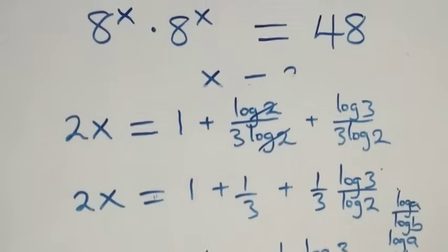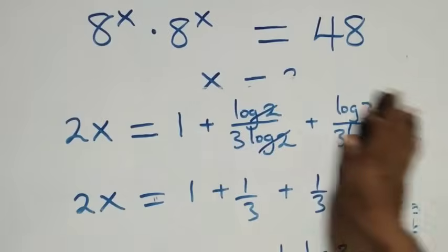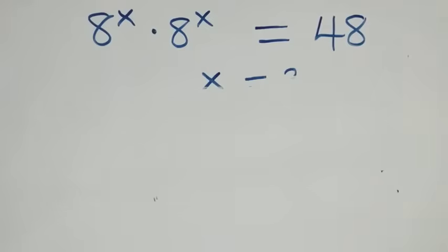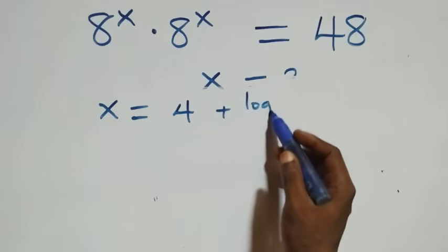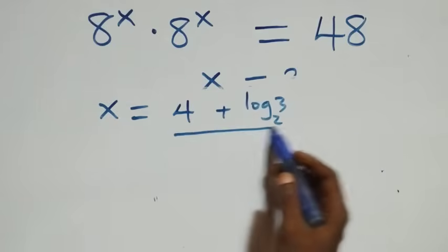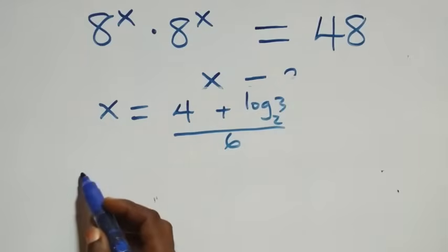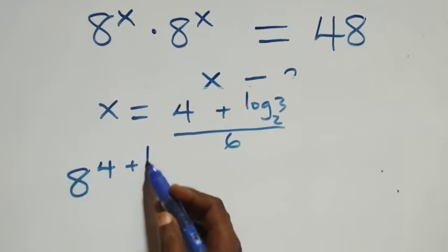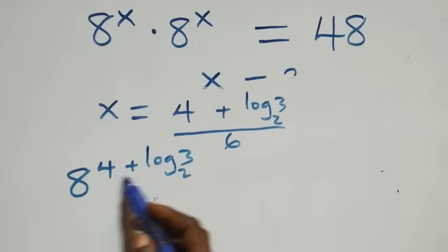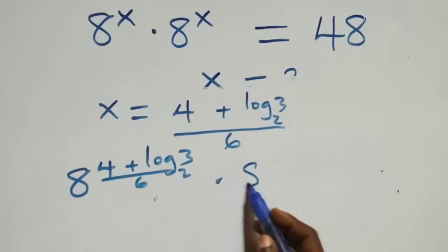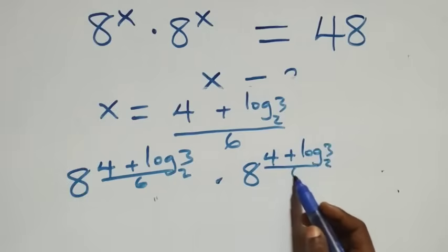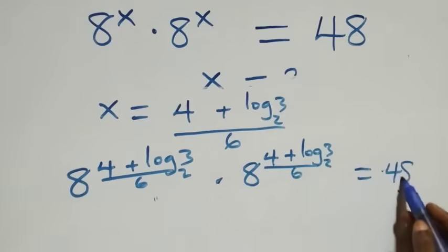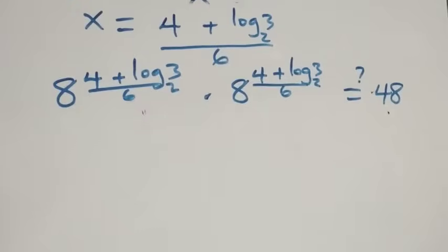Now let's verify this answer satisfies the original equation. We substitute x equals (4 + log₂3) / 6, so we check: 8 raised to power (4 + log₂3)/6 squared equals 48.